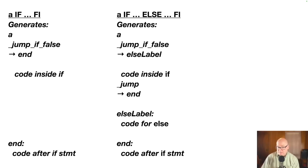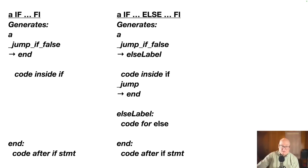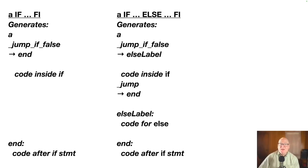The if-else-fee is similar: you evaluate A and jump-if-false to a label, but the label you jump to is the else rather than the end (fee). Once you've done that jump, you do the code inside the if, then you have an unconditional jump to the end. The if block skips over the else block; otherwise you have the else label followed by the else code, and then the end statement. The two labels — the else label and the end label — have to be filled in at the right time.